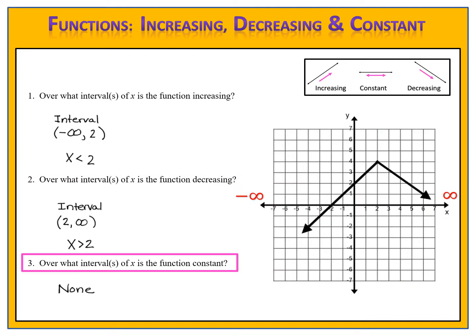The third question asks over what interval of x is the function constant. We examine the graph and see that that never happens, so the answer is none. And now you have found the intervals of increase and decrease for a graph that contains arrows.